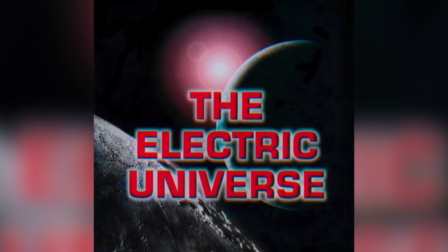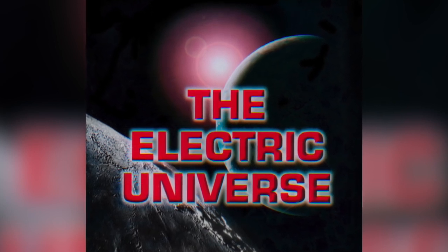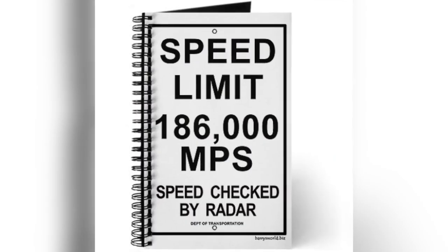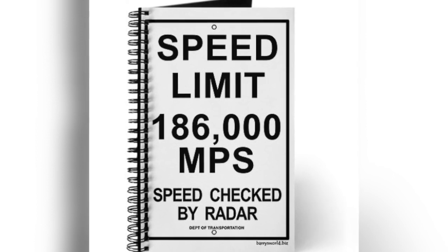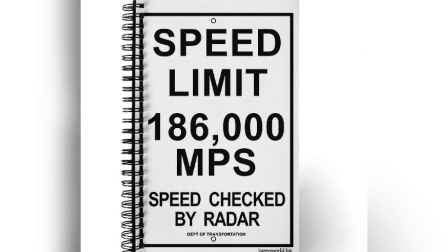But the Electric Universe theory offers a very different perspective. The speed of light limit to communication imposed by the theory of relativity is not a universal speed limit. Physicist Wal Thornhill describes how this can be observed in our own celestial neighborhood. He writes: